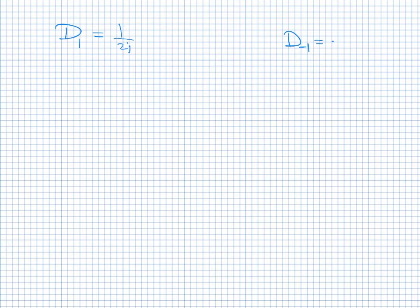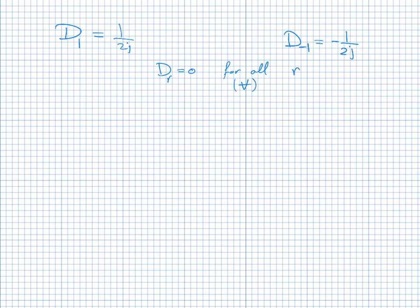For D_{−1}: at R = −1, the first summation vanishes and the second summation gives 20, but there is a minus sign, so D_{−1} = −1/(2j). For all other values of R, D_r = 0.